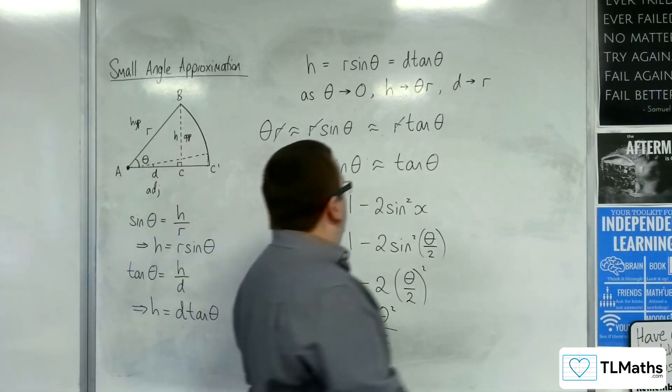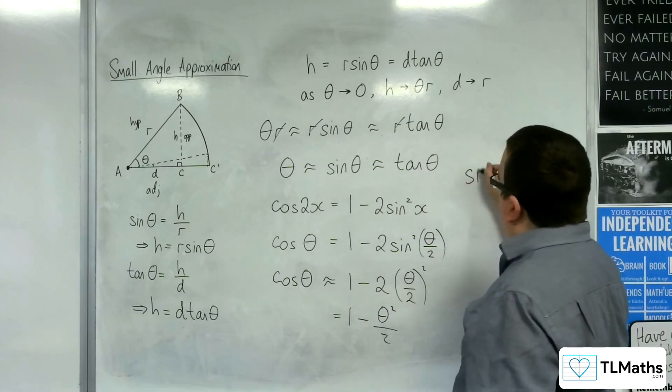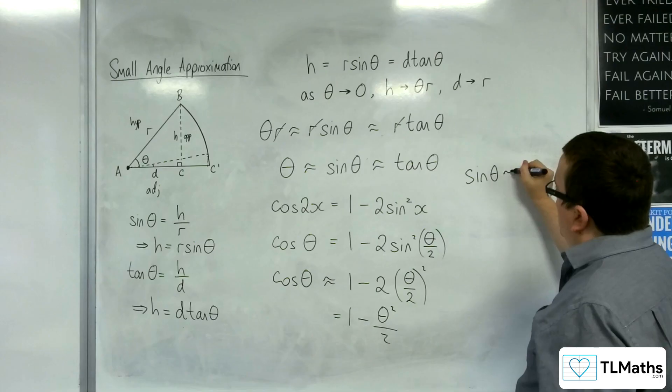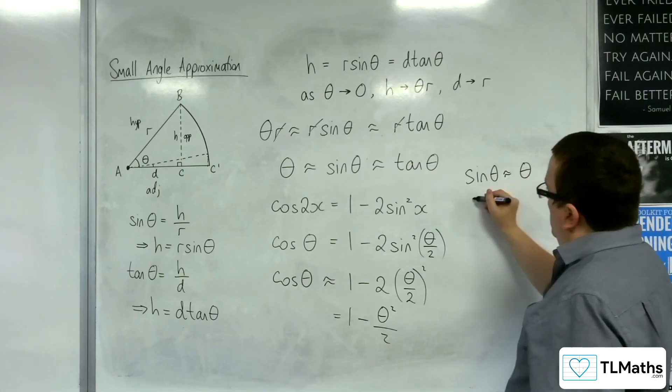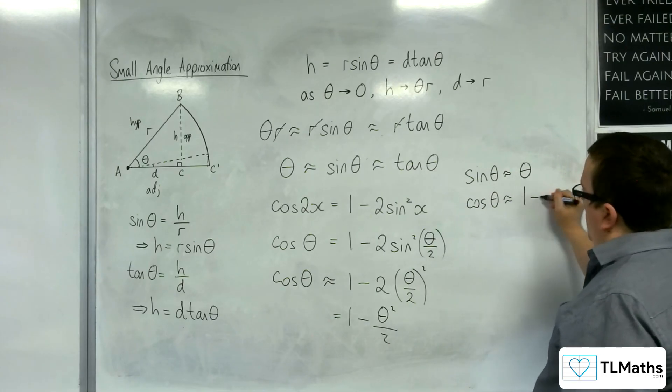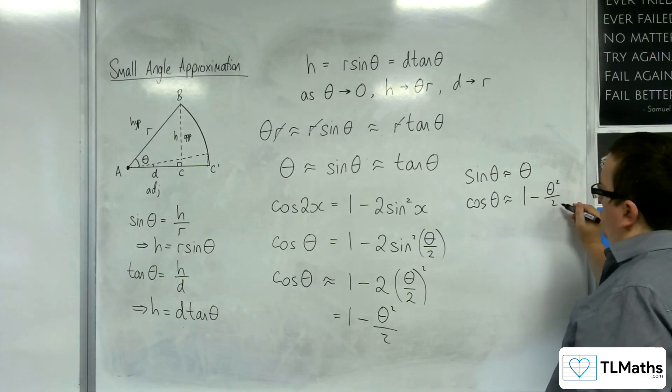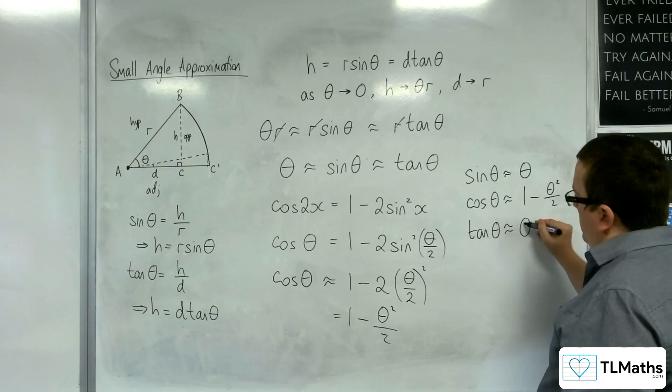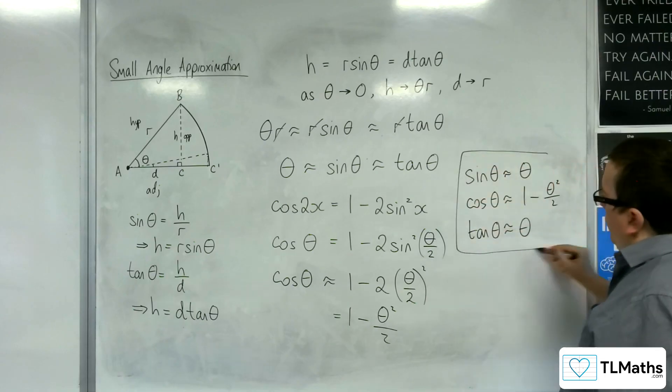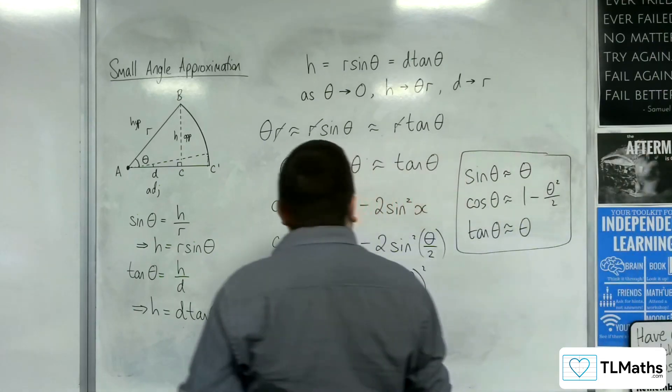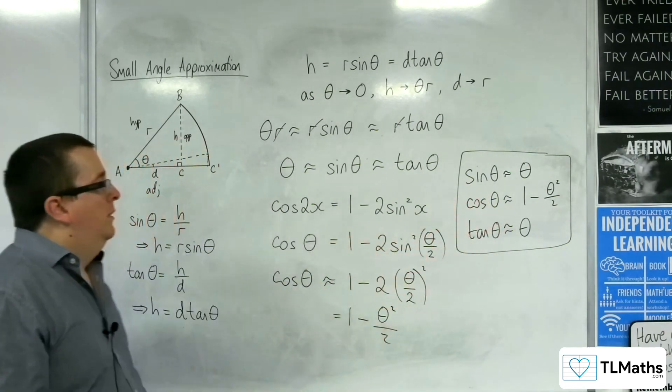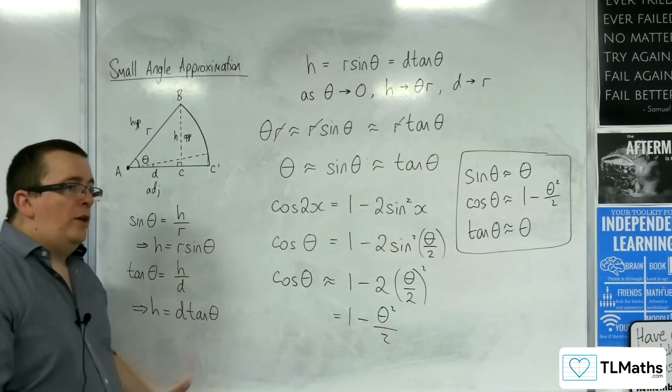And so we have our small angle approximations. Sine of theta is approximately theta. Cosine of theta is approximately 1 take away theta squared over 2. And tan of theta is approximately theta. These are the small angle approximations, which are given to you in the formula booklet. And so this is how they can be derived.